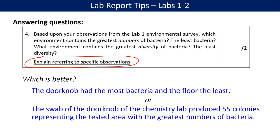It says 'explain, referring to specific observations,' trying to get people to be specific and not vague. I'll give you two examples. You can see both of them are answering at least the first part of the question, in terms of which had the greatest or least number of bacteria. But the first one is vague — are we talking about one having five colonies, the other having four? It's not specific, whereas the second one tells me not just the doorknob, but the doorknob of the chemistry lab, and exactly how many colonies were observed.